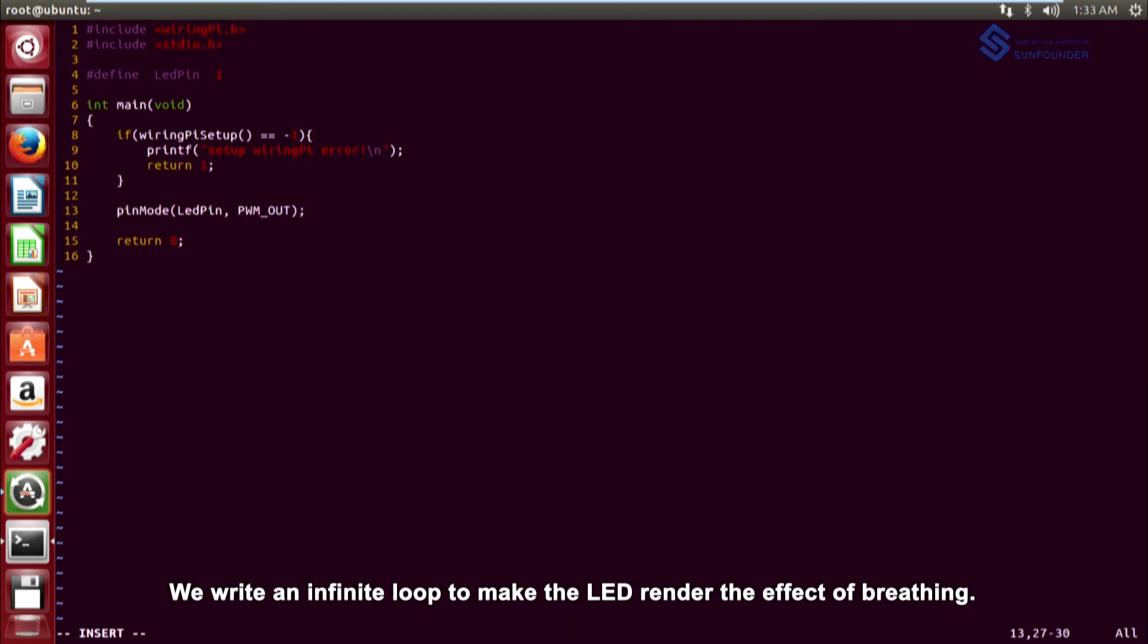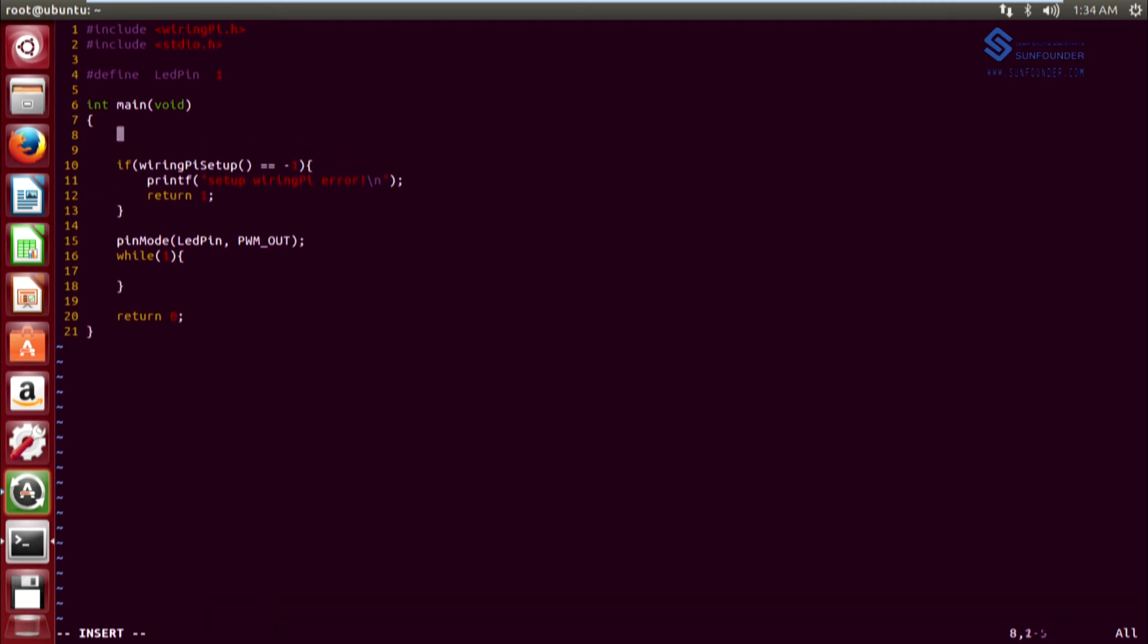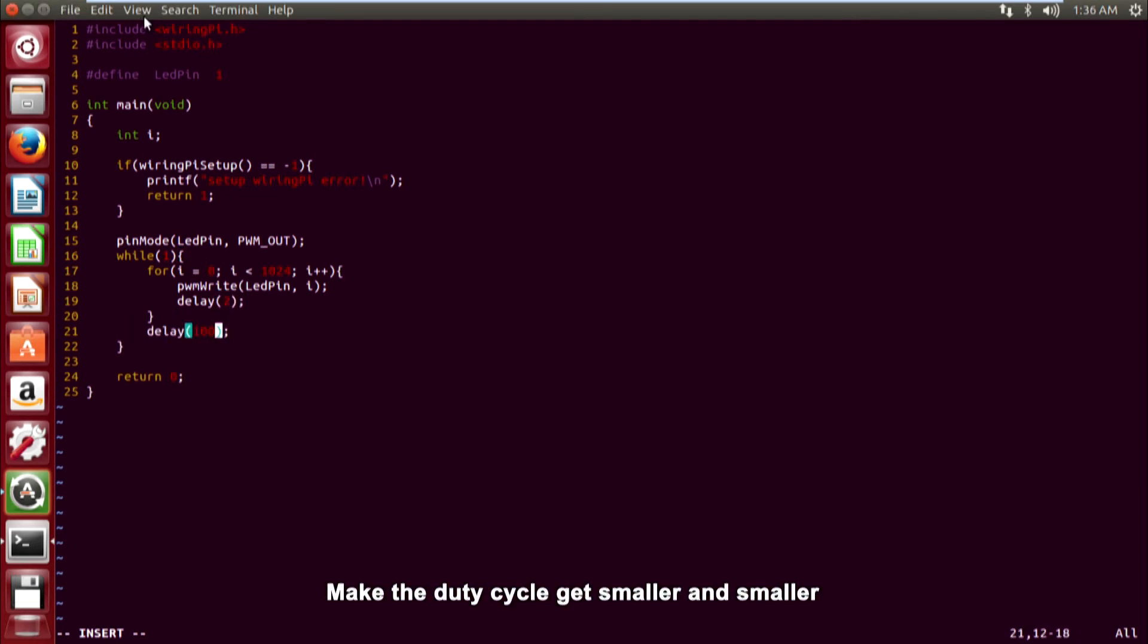We write an infinite loop to make the LED render the effect of breathing. Make the duty cycle get bigger and bigger from 0 to 1023 so that the LED gets brighter and brighter. Make the duty cycle get smaller and smaller from 1023 to 0 so that the LED gets darker and darker.